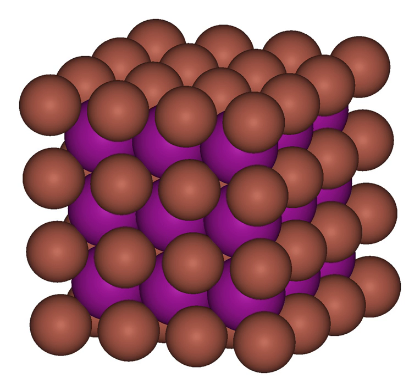Thallium(I) bromide: TlBr is a light-sensitive pale yellow crystalline solid with melting point 460 degrees Celsius. The crystal structure is the same as caesium chloride.